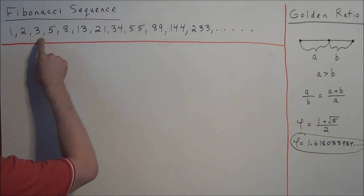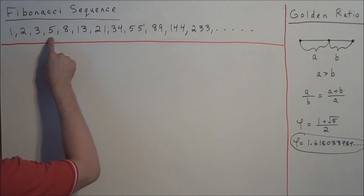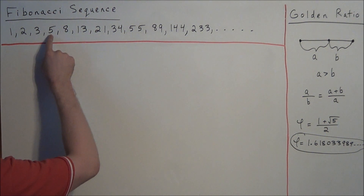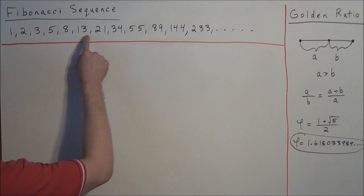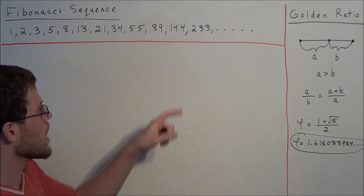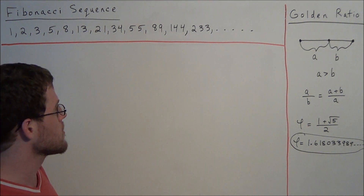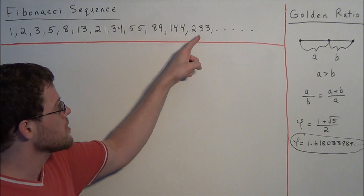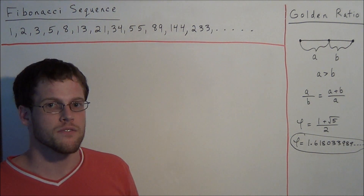If we want to get to the next number, 5, we have 2 plus 3 equals 5, because 2 and 3 are the two numbers before 5. We could continue: 5 plus 8 is 13, 8 plus 13 equals 21. The list was stopped at 233, but if we wanted the next number we could say 144 plus 233 equals 377.